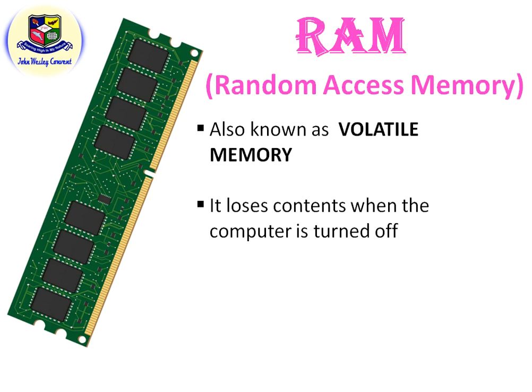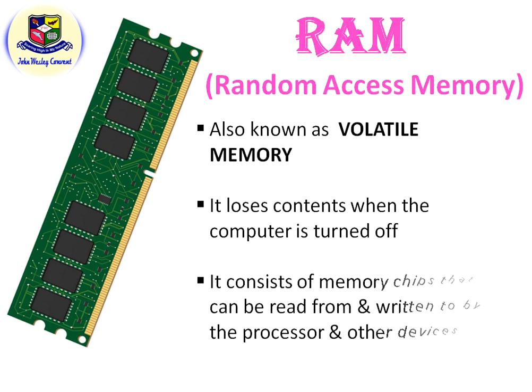Whenever the power goes off and if you have not saved your file, the data gets lost. So in that case this is known as volatile memory. It also consists of memory chips — as you can see, so many black chips are placed here — that can be read from and written to by the processor and other devices.